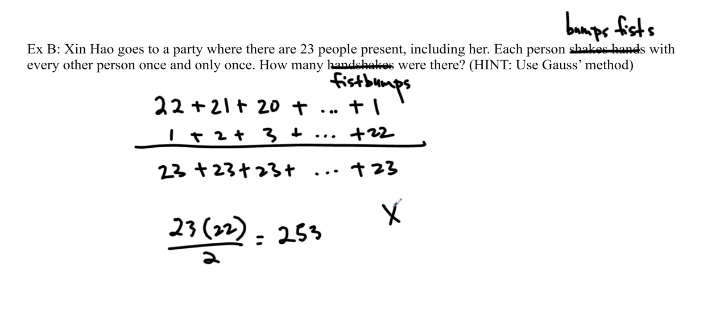How many fist bumps are there? 23 times 22 divided by 2, which is 253. Just typing it into your calculator. At the party, there are 253 fist bumps.